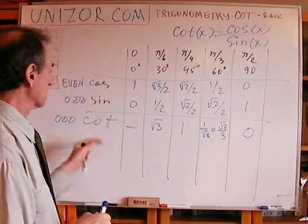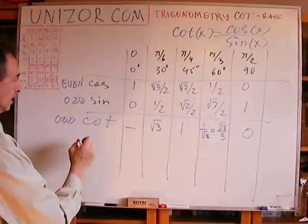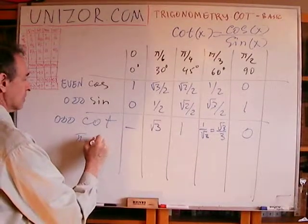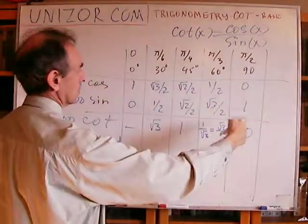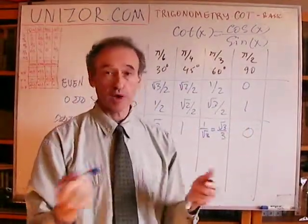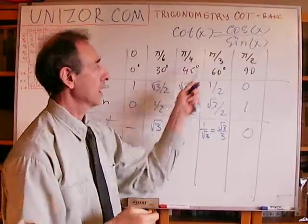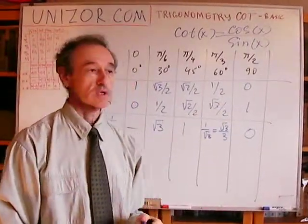Also, don't forget that cotangent is a periodic function, and pi is a period. So, you can add pi or subtract pi to any of these values to get other values.